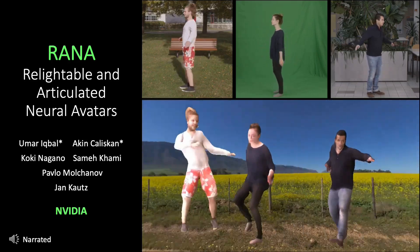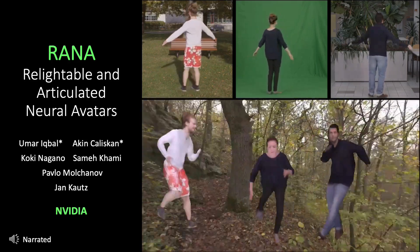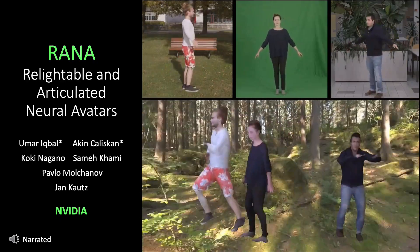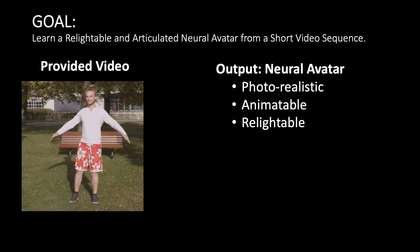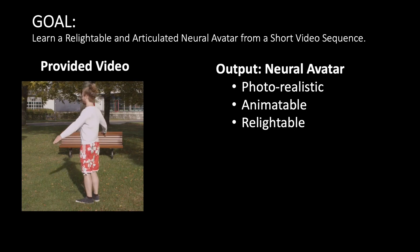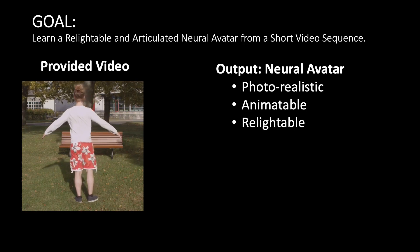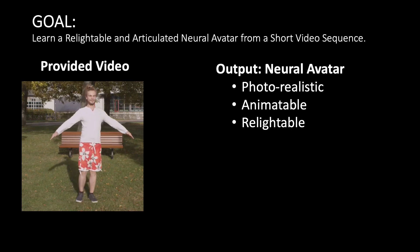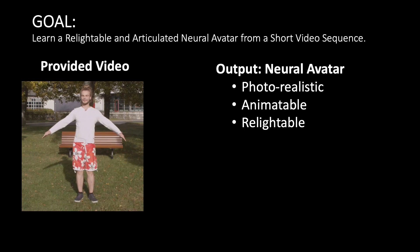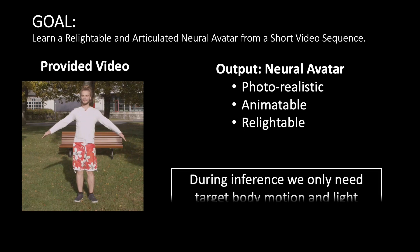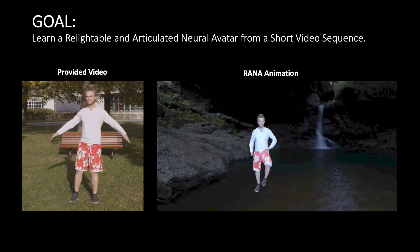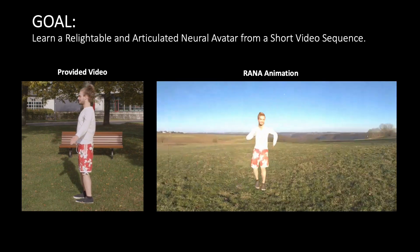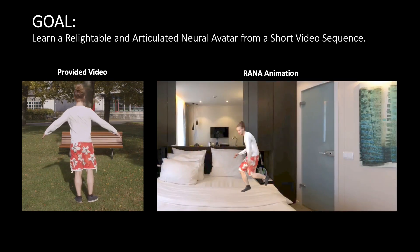We present RANA, an approach for creating relightable and articulated neural avatars. Given a short RGB video of a person in an arbitrary body pose and lighting environment, our goal is to learn a neural avatar that is able to render in photorealistic image quality, can be animated under any body pose and viewpoint, and is easy to relight in novel environments. During inference, we only need target body motion and light, and no exemplar images are required. Here is an example of how RANA, created using the video on the left, can be animated under novel body poses and lightings.